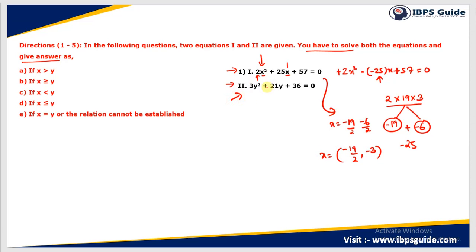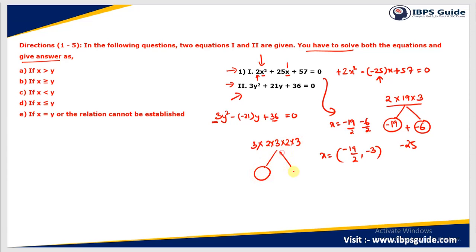Looking at the second equation — since it is plus, I rewrite it as 3y² − (−21y) + 36 = 0. The two numbers are 3 and 36. The product 3 × 36 can be written as 2 × 3 multiplied by 2 × 3. I need two factors whose sum equals −21. So: 3 × 2 = 6, 6 × 2 = 12, and 3 × 3 = 9. Since 9 + 12 = 21, we get −12 and −9. So y = −12 and −9, but divided by 3 gives y = −4 and −3.